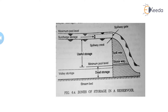We also have a maximum pool level — the level to which water rises during the design flood. We always design hydraulic structures according to the design head. If in the future there is a flood condition, to protect the hydraulic structure from the increased water level, we design it by giving the design head. The level where water will rise during this design flood is known as the maximum pool level.